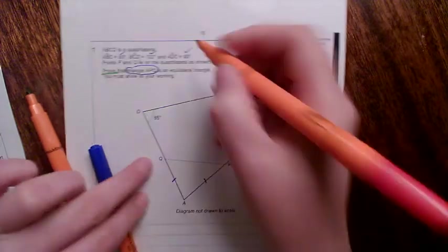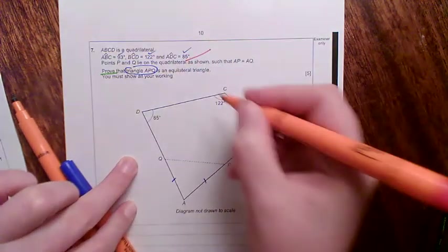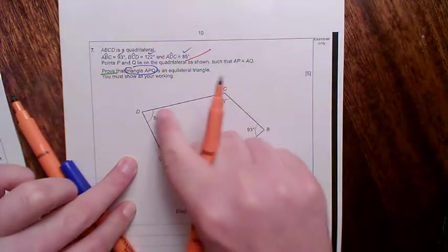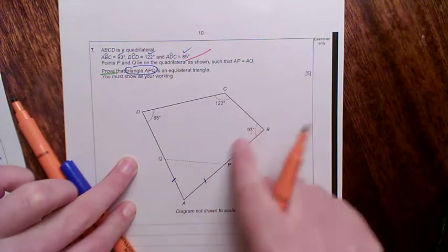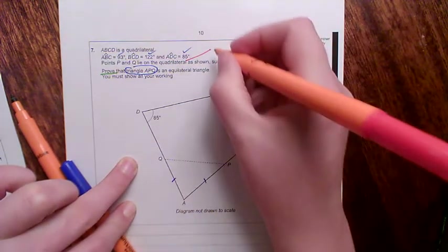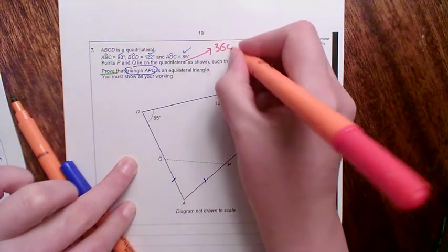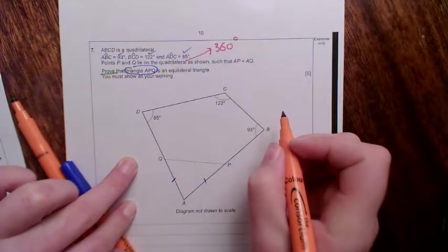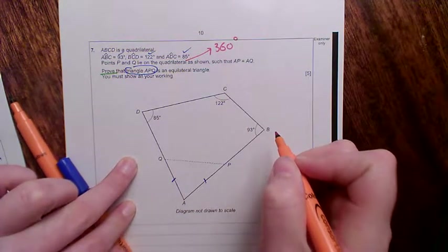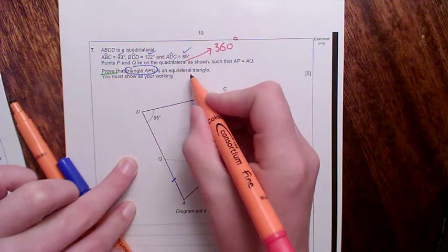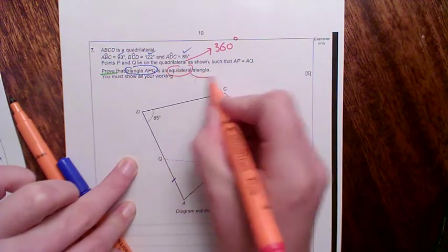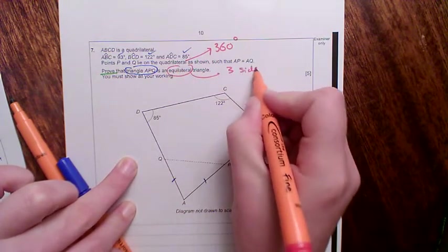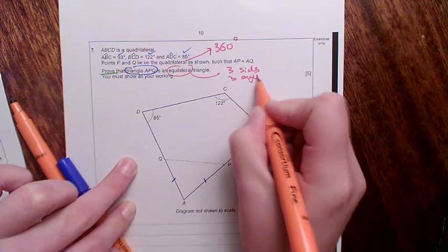Well, before I tackle this question, I'm going to look at this. There's a quadrilateral mentioned here, and that's the big one, DCBAD. And I know that a quadrilateral has angles that add up to 360 degrees. That's going to be important to me. And here, they've mentioned an equilateral triangle, and that's special because three sides and three angles are equal.